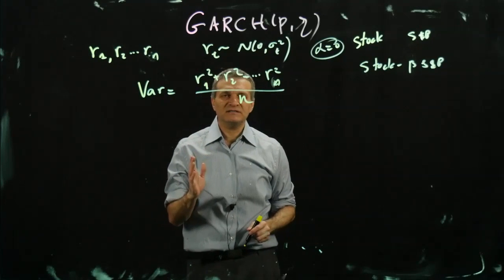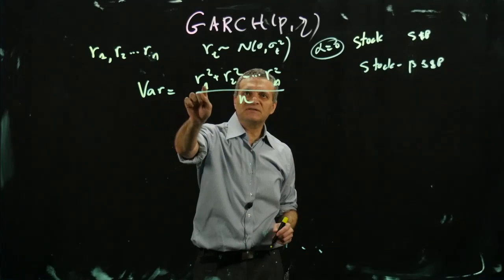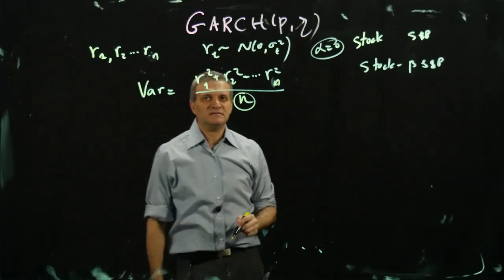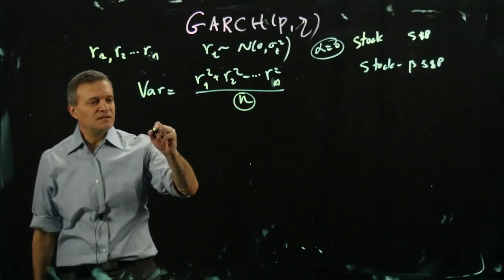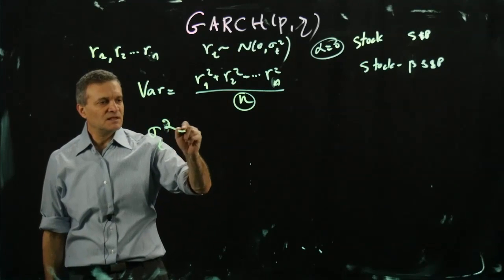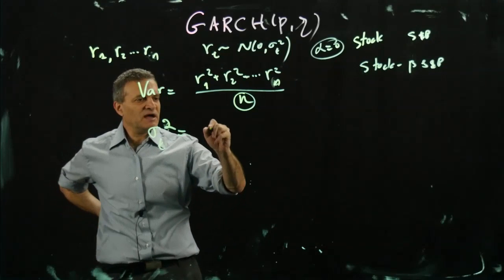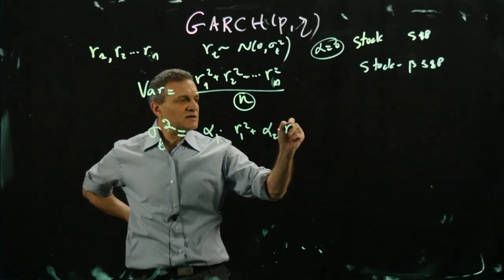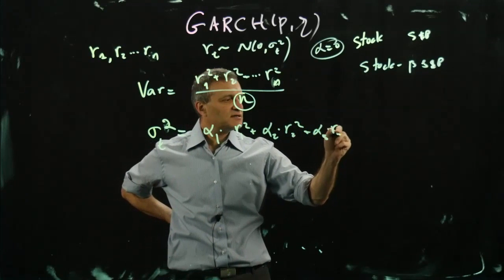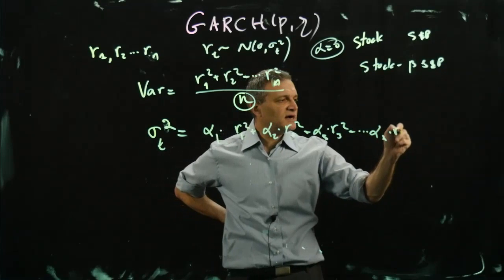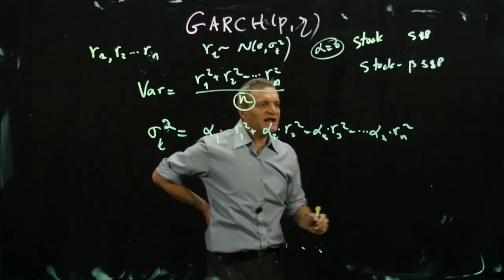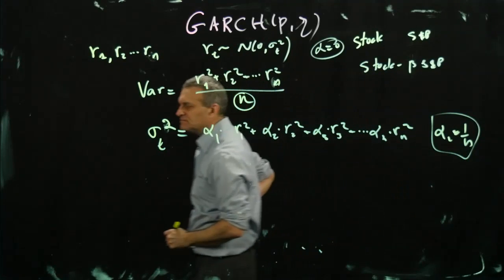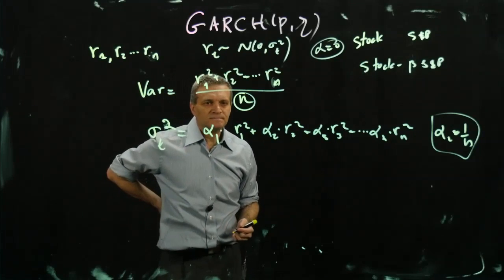We can think about this as a model of variance where each return squared gets a weight. So we can write the variance at time t as: α₁·r1² + α₂·r2² + α₃·r3² + ... + αₙ·rₙ², where each αᵢ equals 1/n.